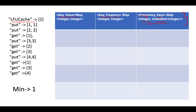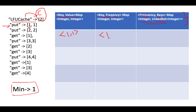The first call is the constructor that defines the capacity of the LFU cache, so the capacity gets fixed at 2. The next operation is put(1,1). We make an insertion in the key-value map for key 1, value 1. The frequency of this key is the minimum frequency, which is 1, so we insert 1→1 in the key-frequency map.